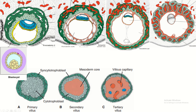In the first week, the blastocyst is formed. In the second week, the embryoblast is converted into epiblast and hypoblast, and two cavities develop: the amniotic cavity and the primitive yolk sac cavity. The trophoblast is converted into two types of cells: cytotrophoblast and syncytiotrophoblast.